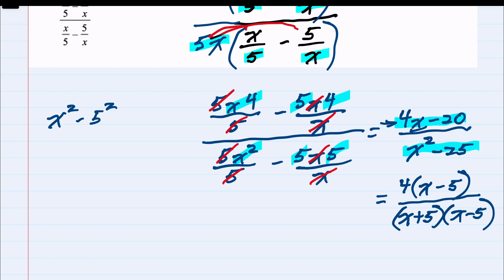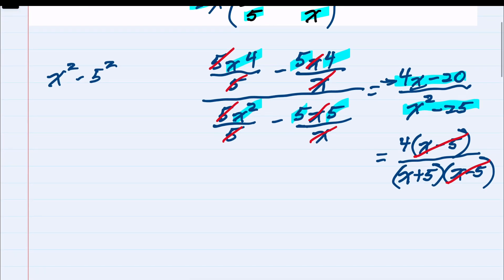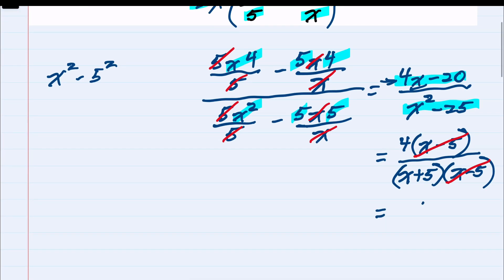And now we can see that the x minus 5 in the numerator and the x minus 5 in the denominator also cancel. So that our fully simplified fraction has only the 4 in the numerator and an x plus 5 in the denominator in its simplest form.